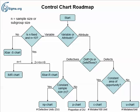If it's attribute data, then we are asked if it's defects or defectives. If it's defectives, the next question is: is the sample size constant? If the answer is yes, then we'll use an NP chart — this is the number of defective units signified by N and P. And if the answer is no, then it's just a P chart, which is the actual proportion of the defective units.